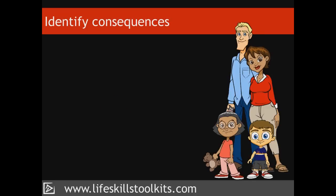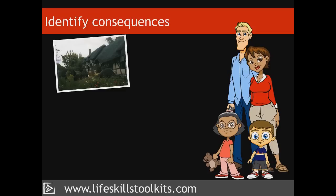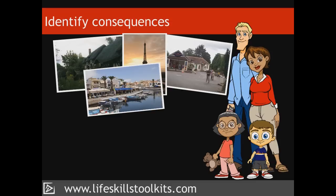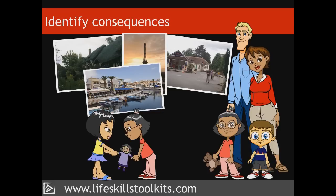A consequence is what we anticipate will happen when we select a particular alternative. For example, the Petersen family have identified four alternatives for a summer holiday: renting a cottage in the UK countryside, staying at a UK holiday village, a trip to Paris and Disneyland, or a package holiday to Crete. Identifying the consequences requires the Petersens to project themselves into the future. For instance, the children being able to play with others their own age is one consequence anticipated for the UK holiday village and package holiday to Crete alternatives.